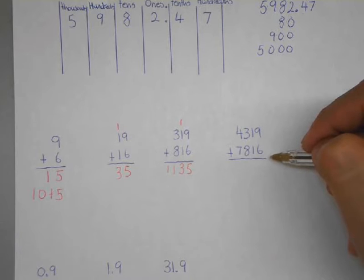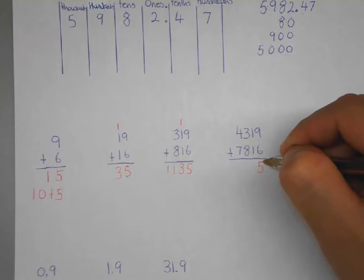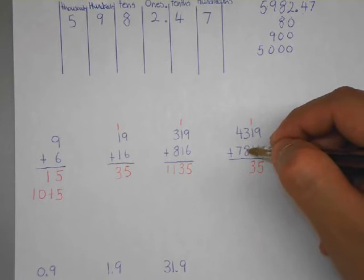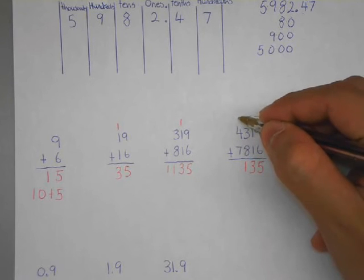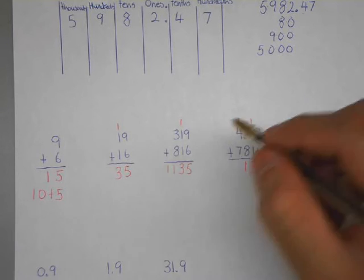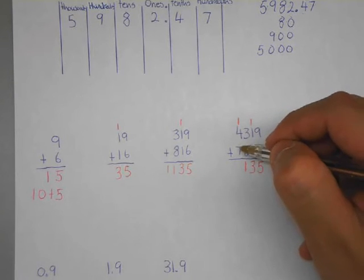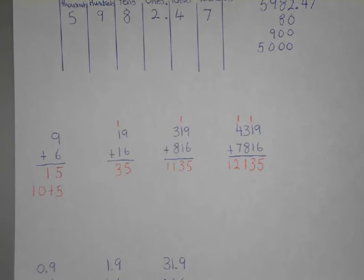A 4-digit by 4-digit number looks bigger, but it's the same concept over and over. We start at the end: 9 plus 6 is 15. Our 15 — we carry the 1 to the top because we've reached that 10 plateau. Move down the column: 1 plus 1 plus 1 is 3. Do we need to regroup? No. So we go with 3 plus 8, and we've reached the 10 plateau again — so the 1 goes on top. We have 11. Then 1 plus 4 is 5, plus 7 is 12. Our answer is 12,135. Adding is simply doing the same thing over and over, no matter how large the numbers get.